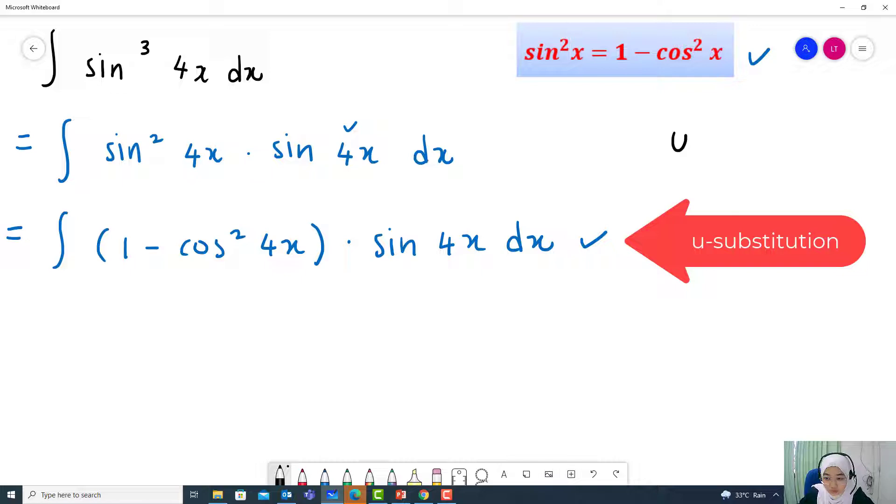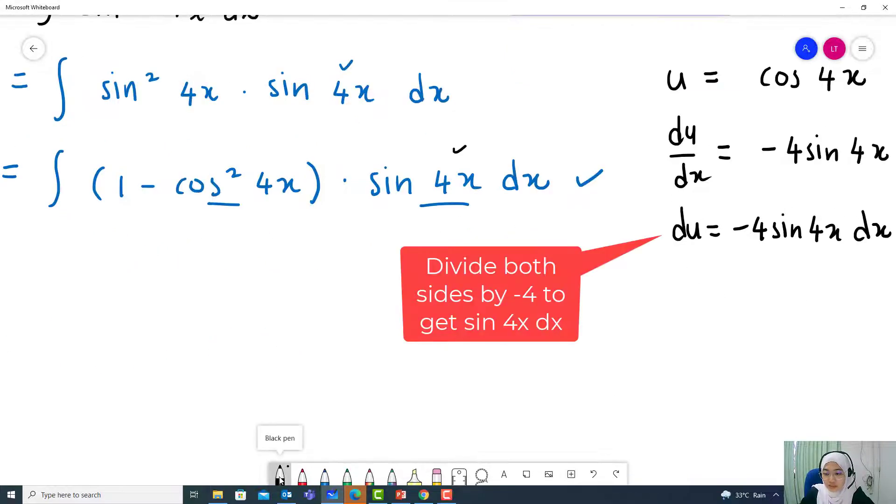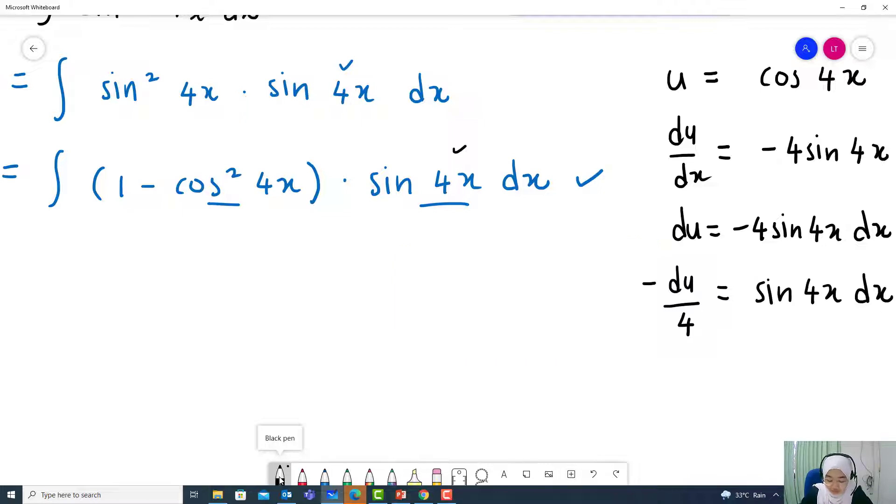If we make u equal to cos 4x, du dx equal to negative 4 sin 4x. Divide both sides by negative 4, you will get negative du over 4 equal to sin 4x dx. That is why we have to keep at least 1 sin 4x on here so that we can use it to change it into du.